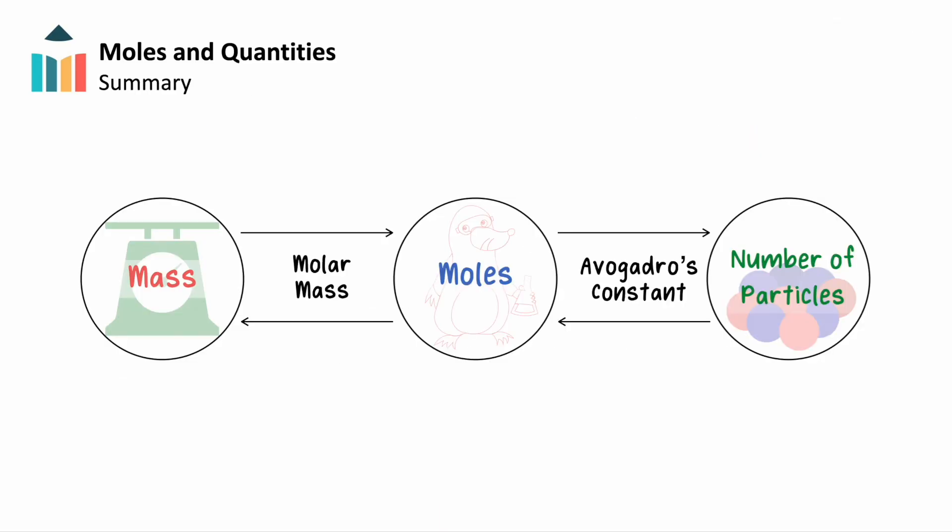In summary, the mole acts as the bridge between the microscopic realm of atoms and the macroscopic realm of measurable quantities. Avogadro's constant can be thought of as a chemist's dozen, where one mole equals 6.02 times 10 to the 23rd particles.